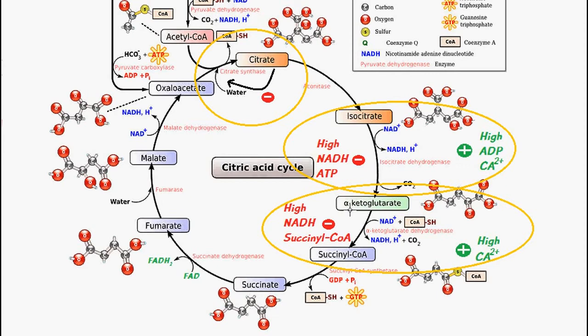Also by high levels of ADP, AMP, or inorganic phosphate, and this leads to increased oxidative phosphorylation or increased activity within the electron transport chain. This leads to more oxidation of NADH, which in turn reduces the amount of NADH.